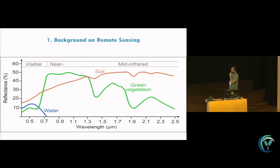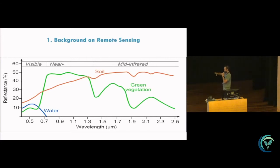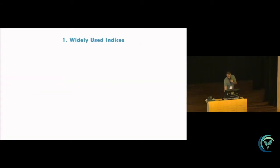Some background on remote sensing: sensors on satellites, aeroplanes, and drones have the ability to measure the reflected sunlight from Earth's surface. Depending on the chemical structure of each element — water, soil, green vegetation, geological structures — they can measure reflectance in different bands from the visible to the mid-infrared.